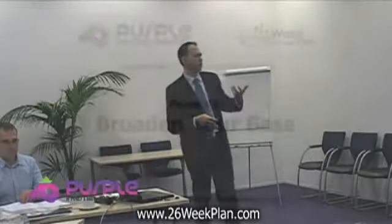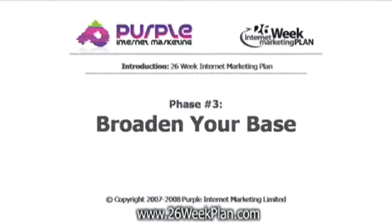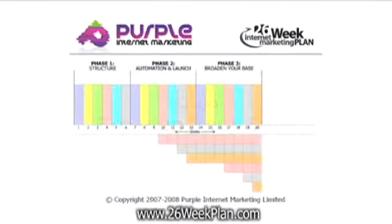Phase three is called broaden your base. It covers seven key areas and introduces additional weekly functions into your business. What phase three involves is really link building — getting lots of other websites involved in building relevant, decent traffic to your website, broadening the amount and location of your traffic. It's essential that you don't just rely on one source of traffic online like Google.